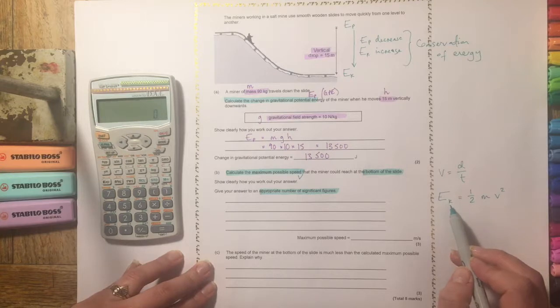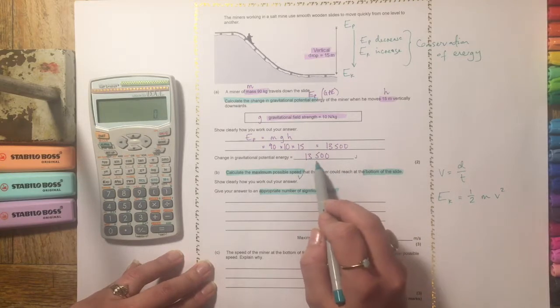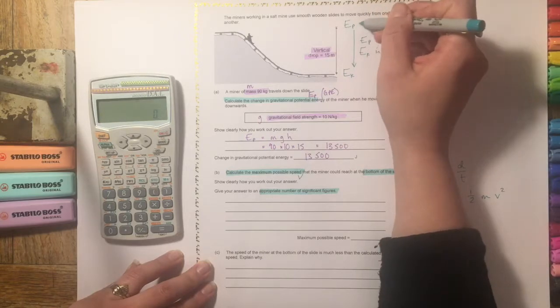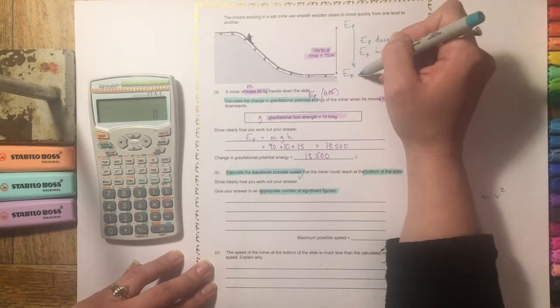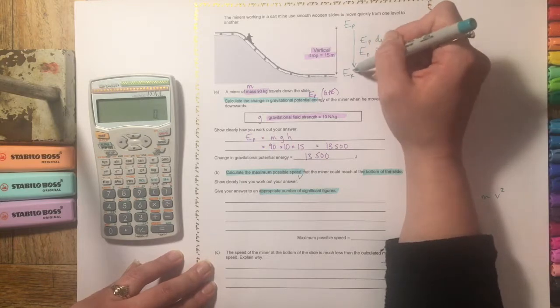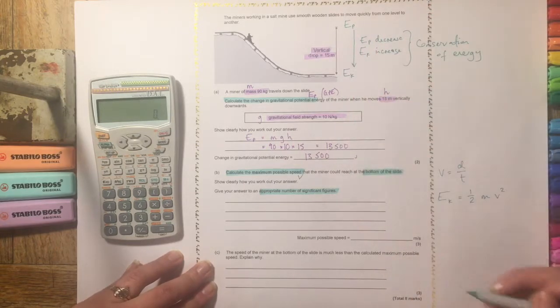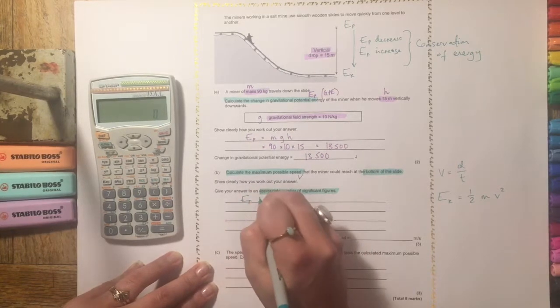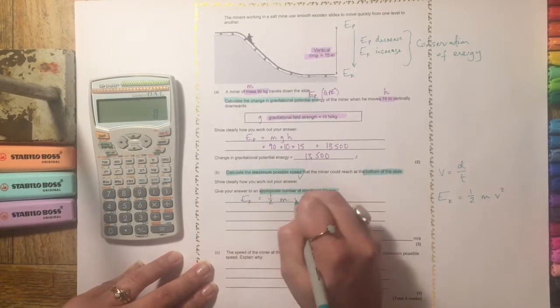So our kinetic energy is this number. It's whatever was in the gravitational potential energy store up here. That will become zero by the time it gets to the bottom, and the kinetic energy store will have this much energy in it.